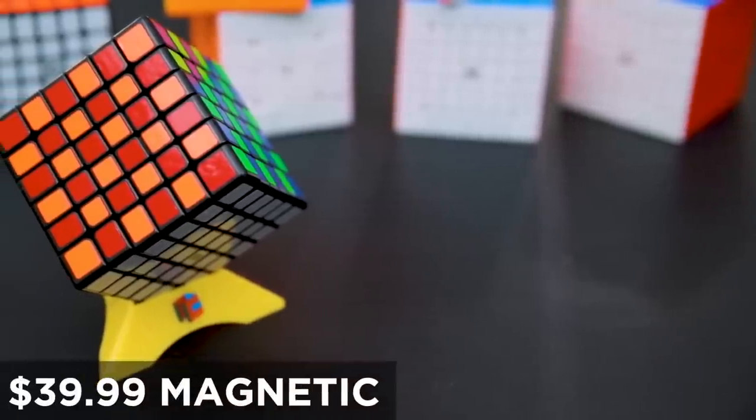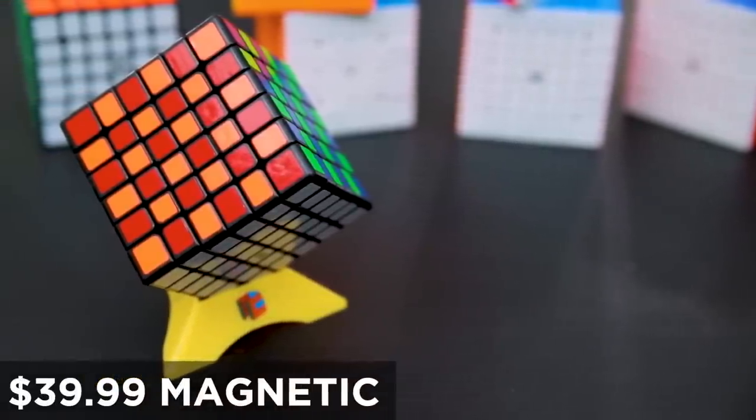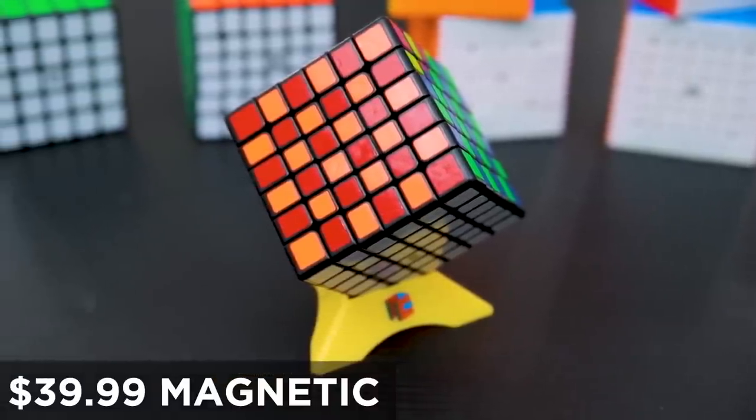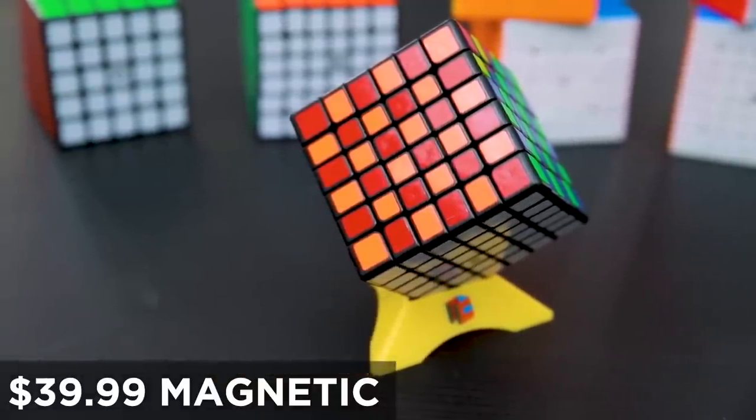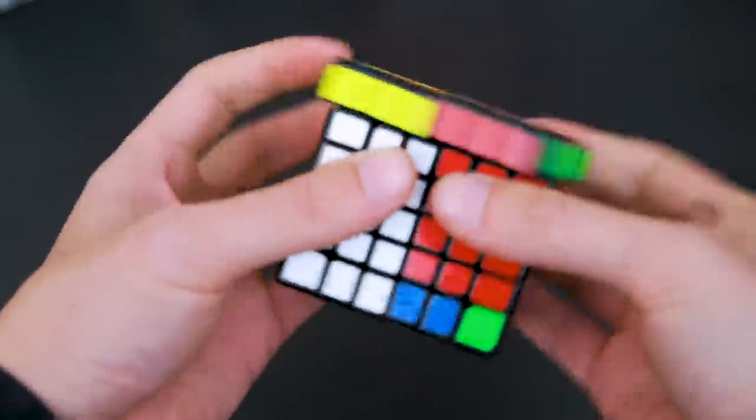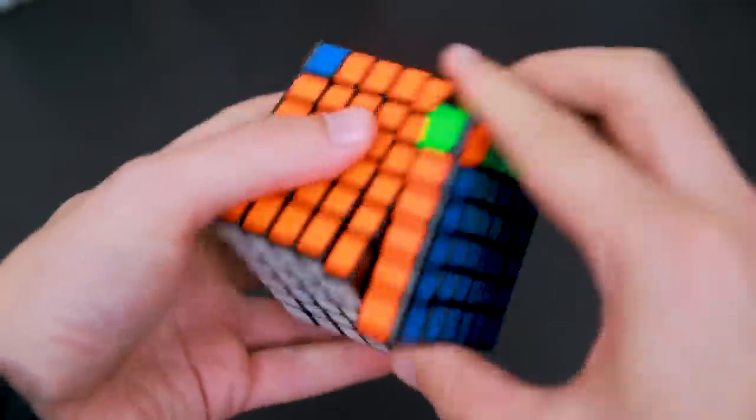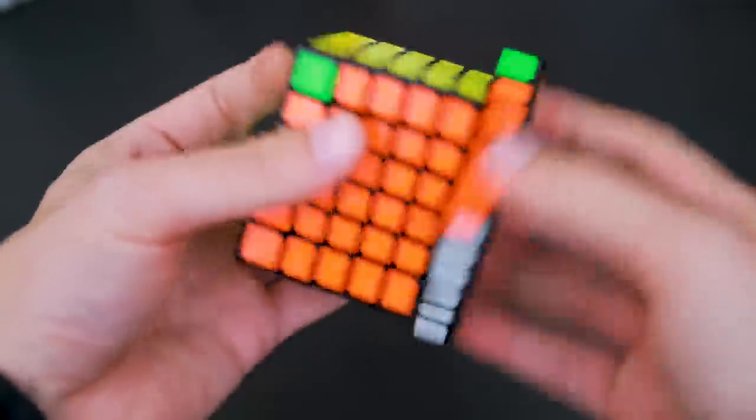Now for our second pick, the Moyu Aoshi GTS-M is also a strong contender in the 6x6 field. Much like Moyu's other big cubes, the Aoshi GTS-M is slightly bubbly, naturally fast, and extremely stable, making it an excellent standout choice. Personally at the office, this is our favorite pick, but both of these cubes are incredible.